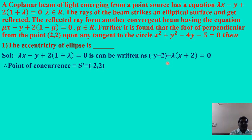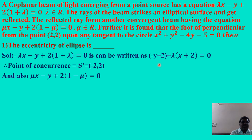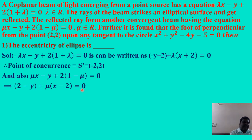All rays start from S' = (−2, 2), meet the surface of the ellipse, and reflect. The reflected beam μx − y + 2(1 − μ) = 0 can be rewritten as (2 − y) + μ(x − 2) = 0. Solving 2 − y = 0 and x − 2 = 0 gives the second point of concurrence S = (2, 2).